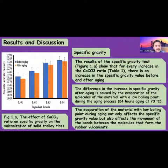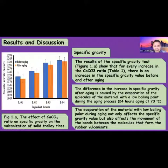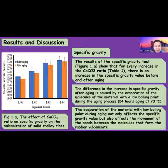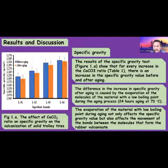Figure 1A shows the effect of calcium carbonate ratio on the specific gravity of solid tires. The results of the specific gravity test show that for every increase in the calcium carbonate ratio per Table 1, there is an increase in specific gravity both before and after aging. The difference in specific gravity after aging is caused by the evolution of molecules of material with low boiling point during the aging process of 24 hours at 70 degrees Celsius. This aging also affects the movement of bonds between molecules that form the rubber vulcanizate.